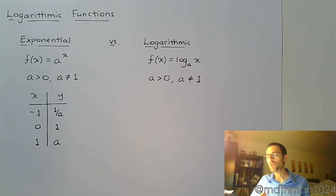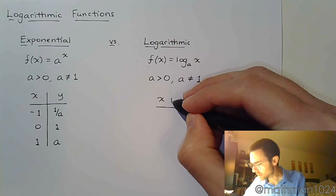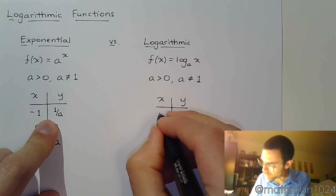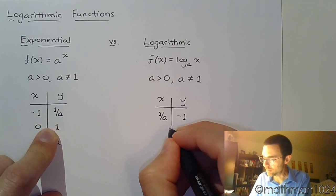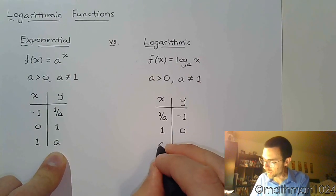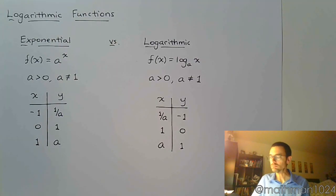Now, since we're supposed to be the inverse with the logarithm, that means that all of those ordered pairs get swapped around. Remember, x becomes y, y becomes x. So this guy becomes one over a is going to give you negative one. You plug in one, and you get zero. You plug in the base itself, and you get one. Because x becomes y, y becomes x.